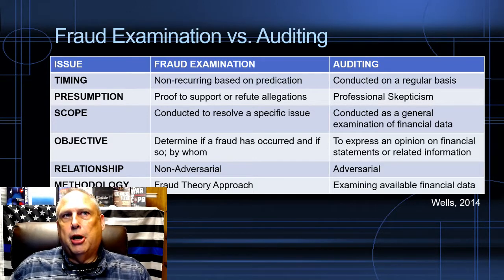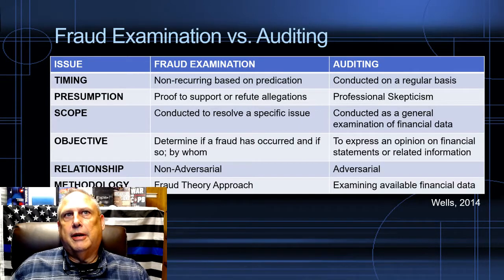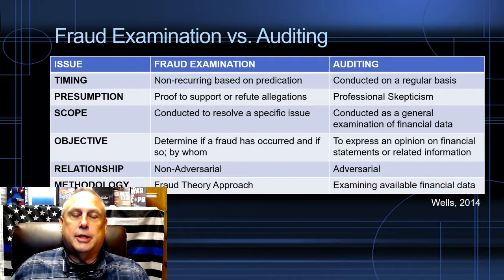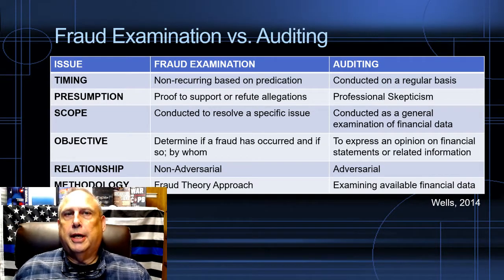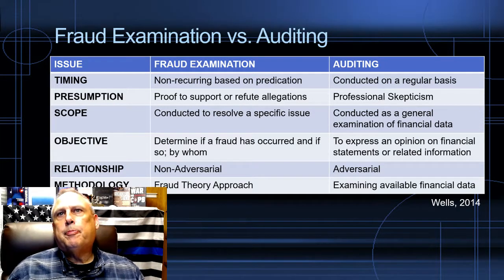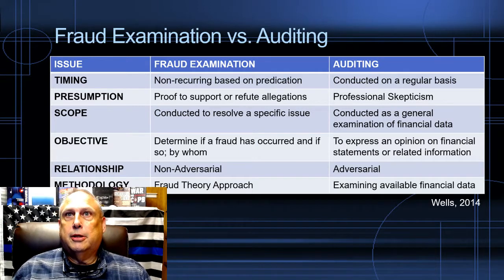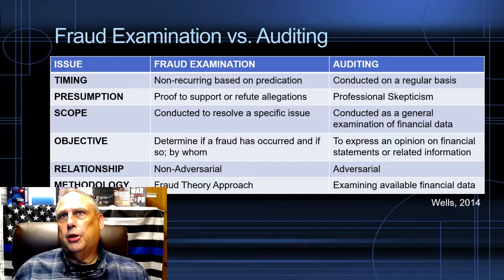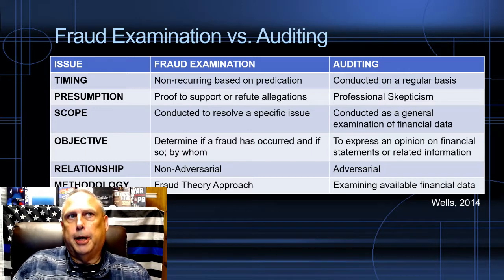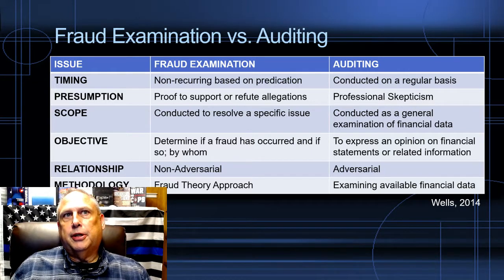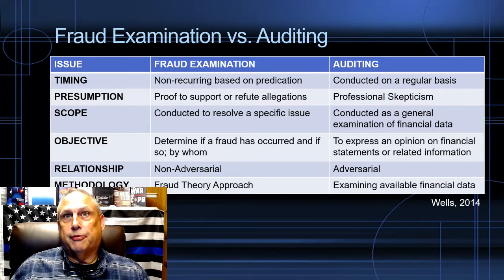So Fraud Examination and Auditing — what's the difference? The difference is significant. The timing is significantly different. In Fraud Examination, it's non-recurring and it's based on some predication — we had to get some information that a fraud was suspected. In auditing, they're conducted on a regular basis, either yearly or every three years or every five years, depending on the operation of the underlying company. The presumption is different: in Fraud Examination, the presumption is proof to support or refute allegations of fraud, and in auditing it's just professional skepticism.